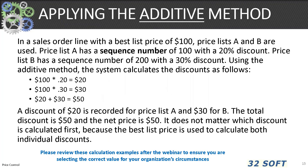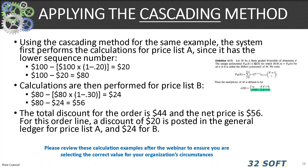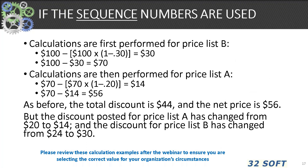Here is a mathematical example of the discount combination equal to additive. The combination setting for price lists is somewhat complicated and requires specific understanding of the calculations involved. Please review these calculation examples after the webinar to ensure you are selecting the correct value for your organization's circumstance. Here's another mathematical example for cascading calculations, i.e., multiplicative. If the cascading method is used, the sequence number in 1.10.1.24 affects the mathematics of the calculations.